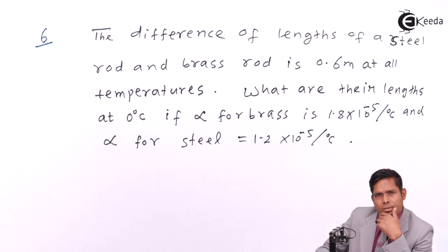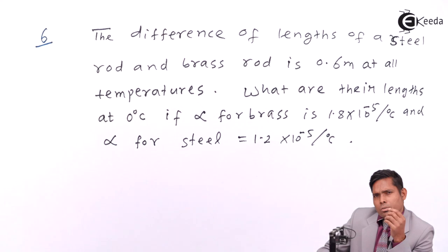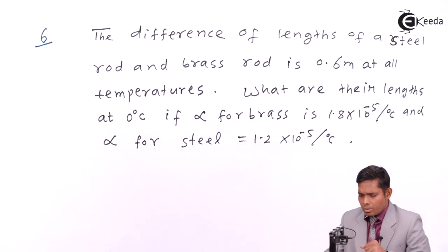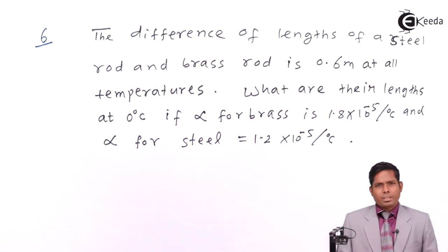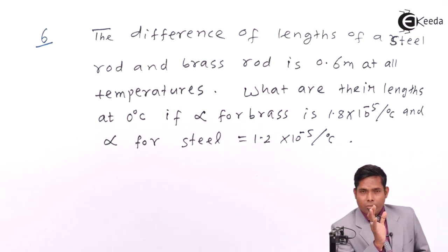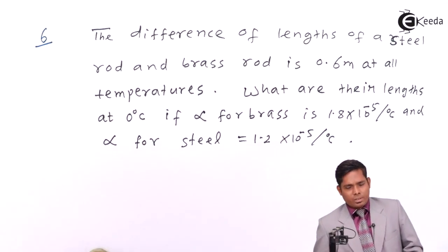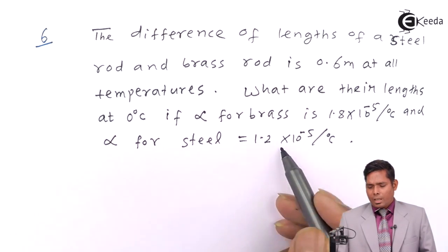The question asks for their lengths at 0°C. Instead of choosing any arbitrary temperature, the question specifically asks for lengths at 0°C — that is, what is the length of each rod when it is at 0°C. What is given to us are the values of alpha for brass and alpha for steel.